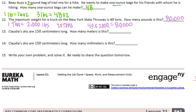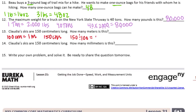Number 13: Claudia's skis are 150 centimeters long. How many meters is this? I know that 100 centimeters is equal to 1 meter. If I have 150 centimeters and I want to turn that into meters, I need to divide, and I'll get 1.5 meters.